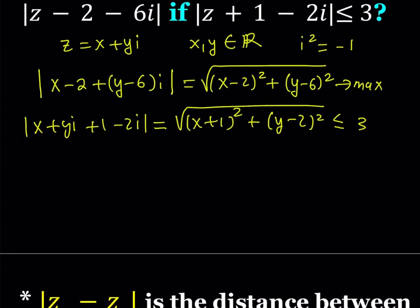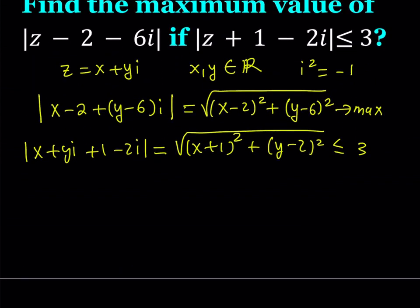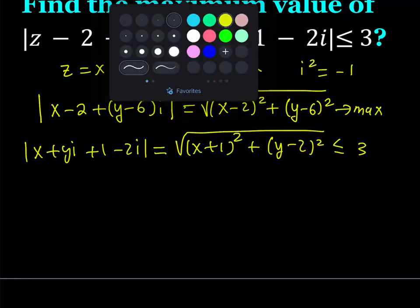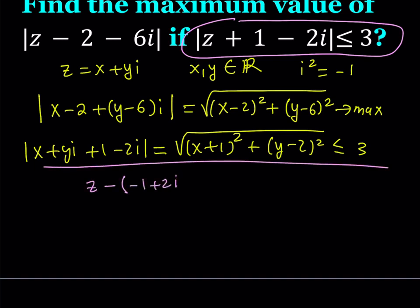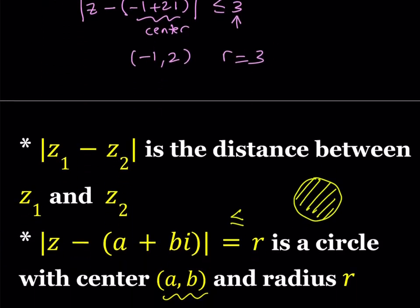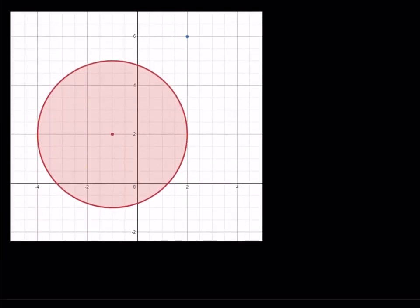So having said this and looking at our expression, let's go ahead and solve this using analytical geometry. I'm supposed to talk about a circle here — we do have a circle, including the inside. Let's make a graph of that circle. Based on the givens, the circle can be written as the absolute value of z minus negative 1 plus 2i, so this represents the center. We have a circle whose center is at negative 1 comma 2 and whose radius is 3. Let's visualize that: a circle centered at negative 1 comma 2 with radius 3, including the inside, since the inequality is less than or equal to.